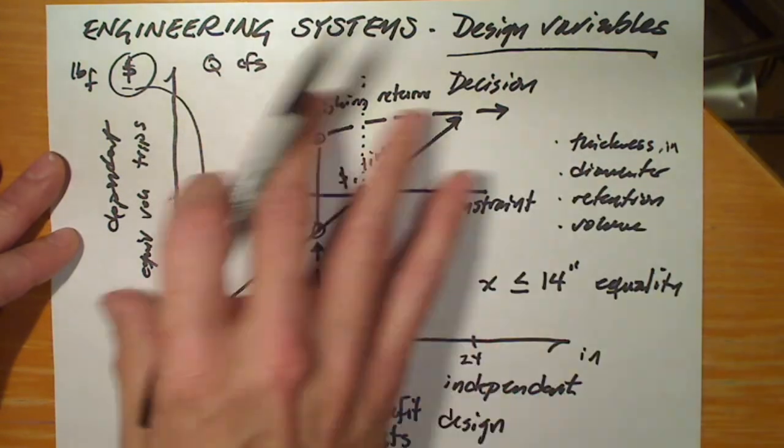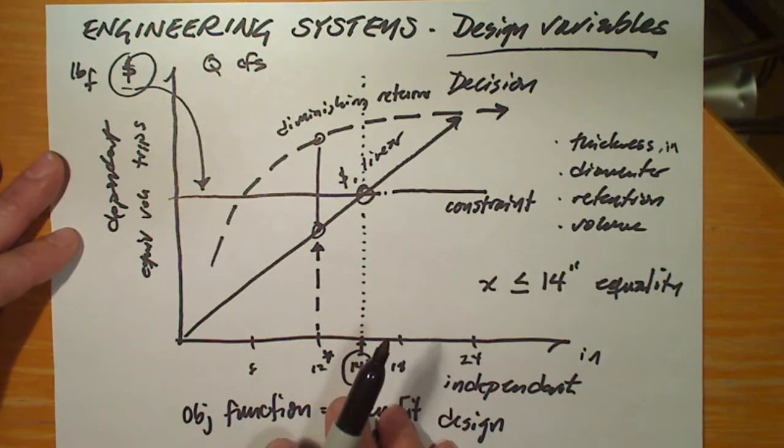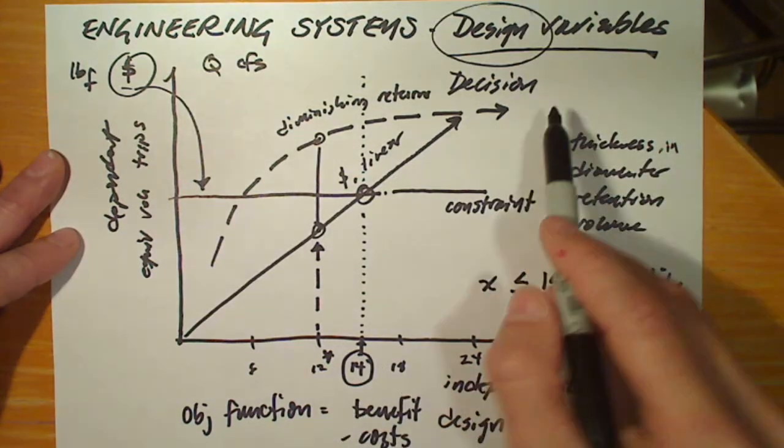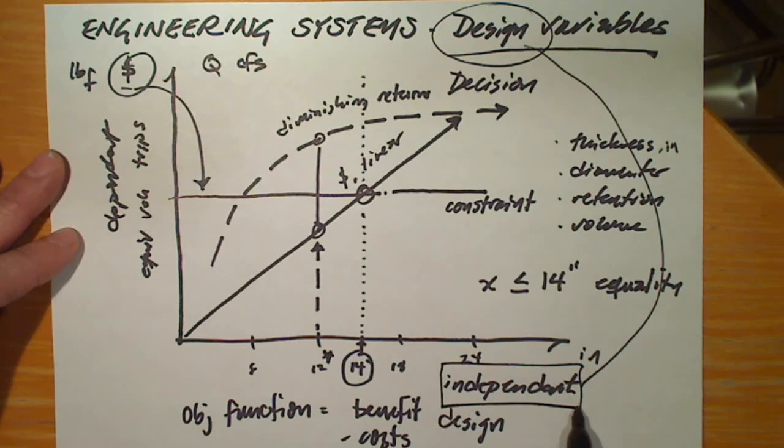So we now have three important vocabulary words that we need to understand. Design variable is that independent variable over which we exercise discretion.